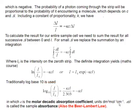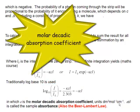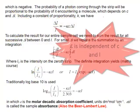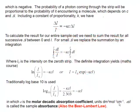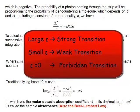Epsilon is what we call the molar decadic absorption coefficient. It's a function of the molecule, so it's independent of the concentration or the length of the sample. It tells us about the propensity of the molecule to absorb light. If epsilon is a large number, then that's a strong transition. If it's a small number, then it's a weak transition.